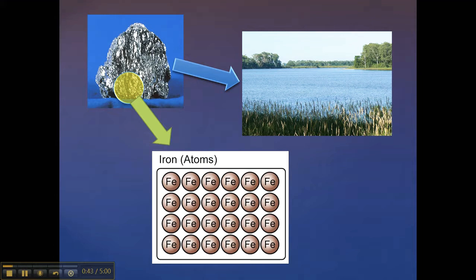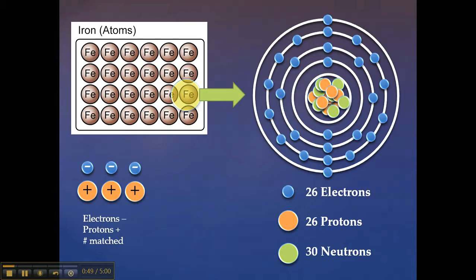If we zoom in again on the iron atoms, we can see that they too are made up of even smaller building blocks called subatomic particles. These subatomic particles are called protons, which have a positive charge, neutrons, which have no charge, and electrons, which have a negative charge.